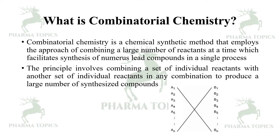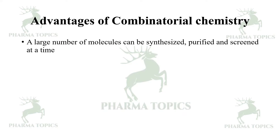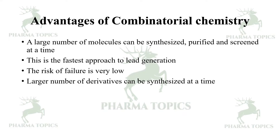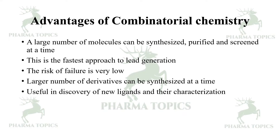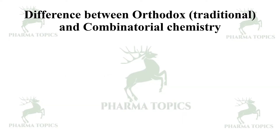The advantages of combinatorial chemistry: a large number of molecules can be synthesized, purified, and screened at a time. This is the fastest approach to lead generation. The risk of failure is very low. Large number of derivatives can be synthesized at a time. It is useful in discovery of new ligands and their characterization, and in synthesis of biomolecules by iterative amino acid peptide synthesis.